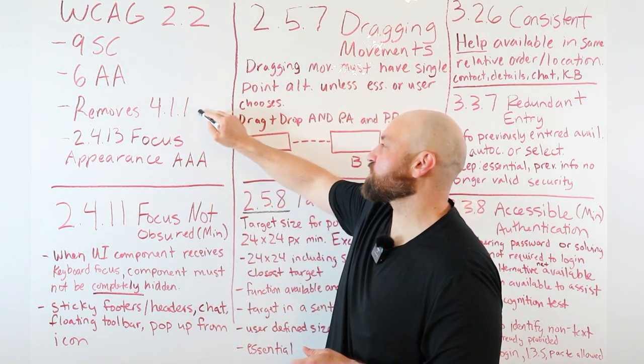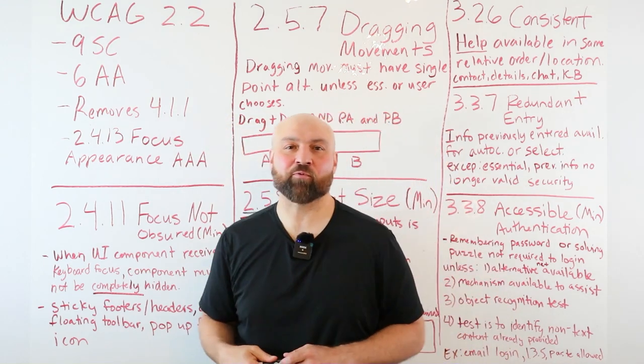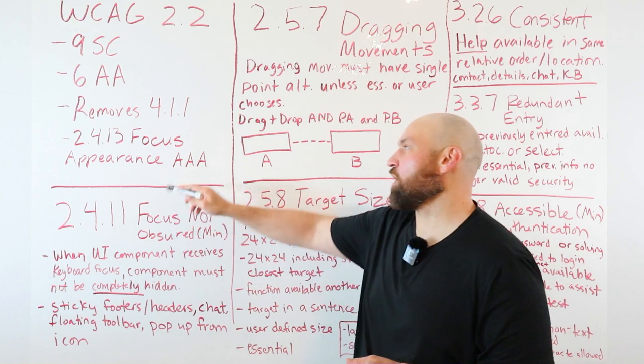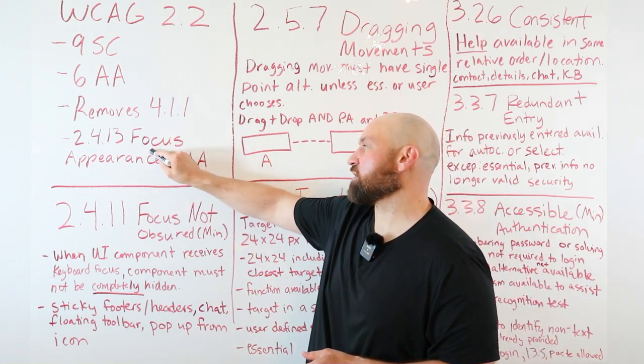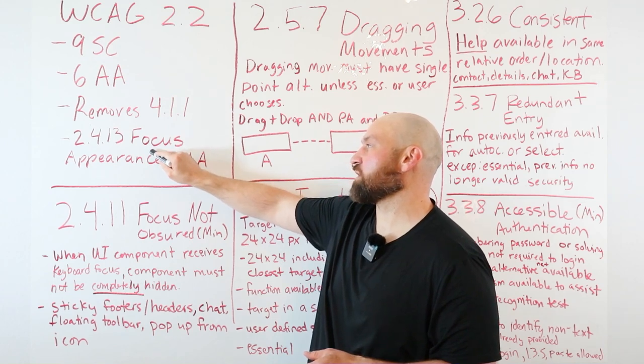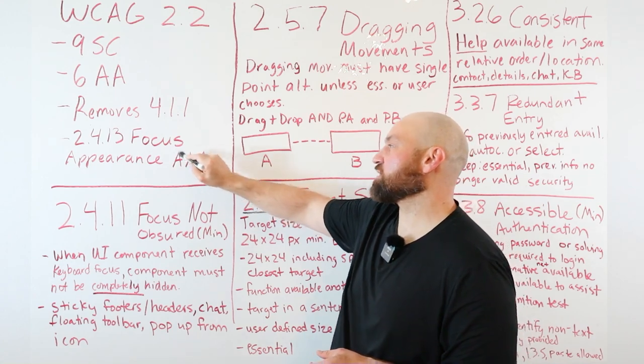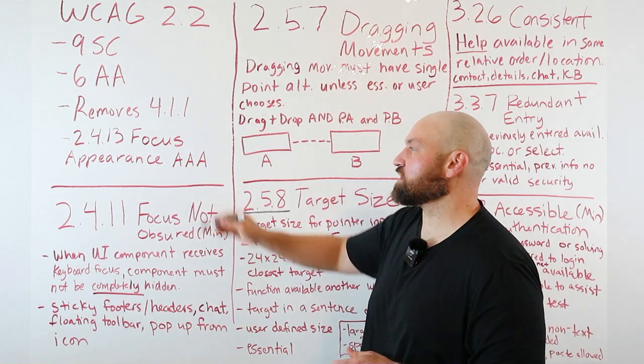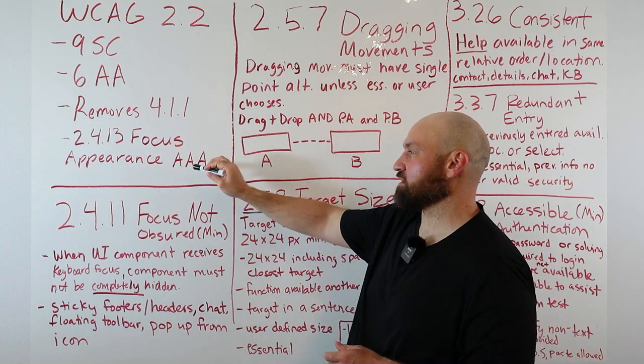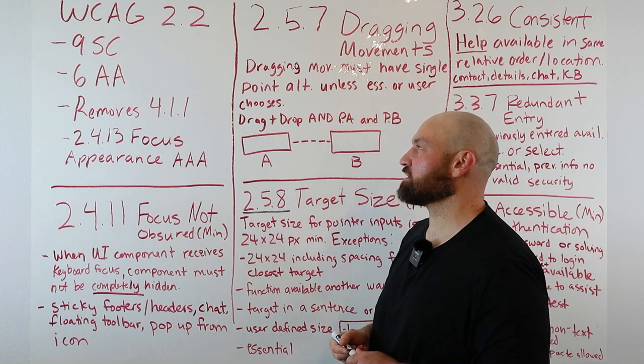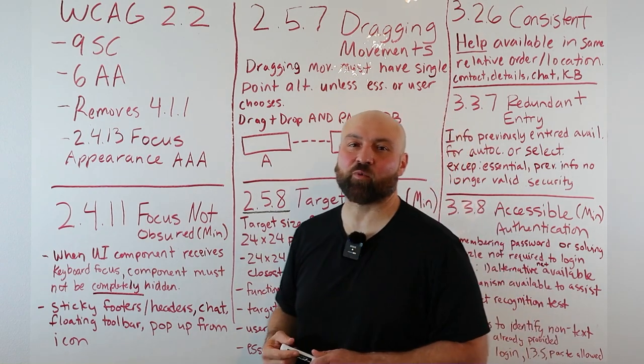Version 2.2 does remove 4.1.1, so they broke their backwards compatible rule. Also note that 2.4.13 was a double A conformance success criterion previously in working drafts, but now it has moved to triple A conformance. This was for focus appearance, so 2.4.13 is now triple A, no longer double A. We're just looking at six success criteria, and I have summaries of all six on the whiteboard behind me.